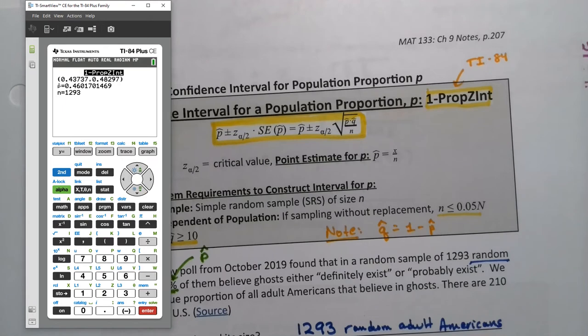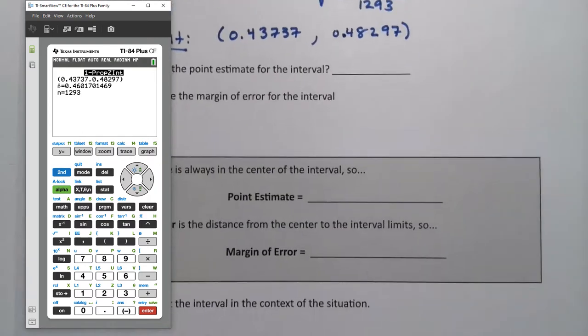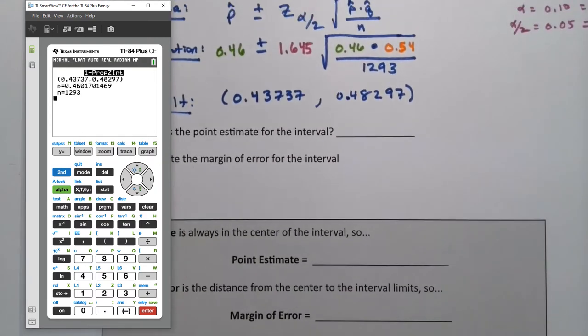So press Stat, go back to Tests. It was letter A, which is actually closer to the bottom. So if you go to the up arrows and kind of work your way up there, it's all still sitting in there. And I press calculate and you get the same answer that we did when we did StatCrunch: 0.43737 or 48297.